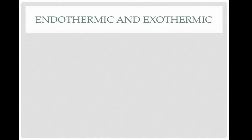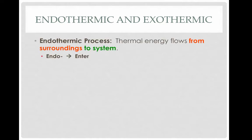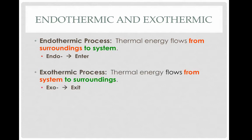The distinction between system and surroundings is important when we try to understand the difference between endothermic and exothermic processes. In an endothermic process, energy flows from the surroundings into the system. Energy is entering the system — 'endo' means to enter. This causes the system's temperature to increase and the surroundings' temperature to decrease. An exothermic process is the exact opposite: energy flows from the system to the surroundings. Energy is exiting the system — 'exo' means to exit. Here, the system is cooling down and the surroundings are heating up.